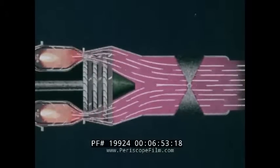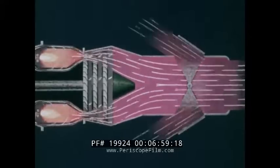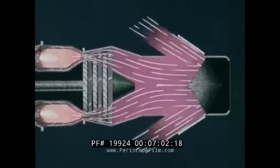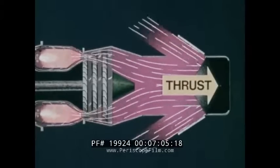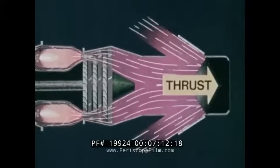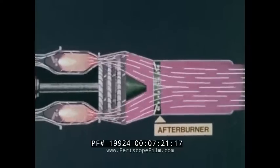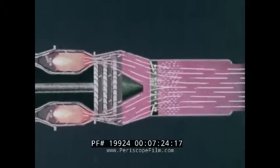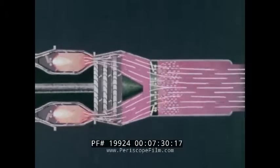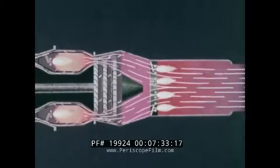Reaction also makes a thrust reverser work on a turbojet engine. When the plane touches down, the reverser is moved so that it deflects the exhaust gases, reversing their direction. The thrust now opposes the forward motion of the airplane and slows it down, not only saving the brakes, but also providing additional safety on slippery runways. Some turbojets are equipped with an afterburner that provides extra thrust for short periods. When fuel is injected, it combines with the unused oxygen in the exhaust. The extra burning increases the exhaust gas temperature and velocity, substantially increasing the energy and the thrust.